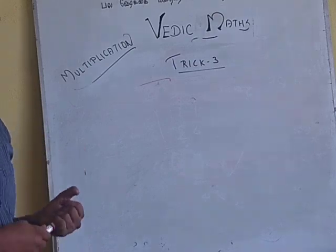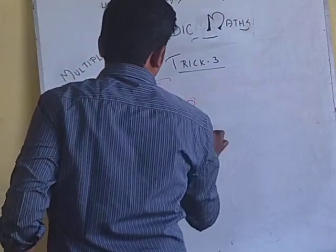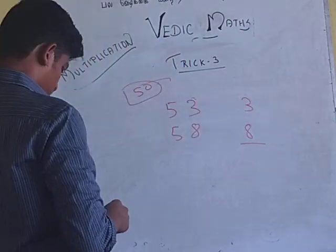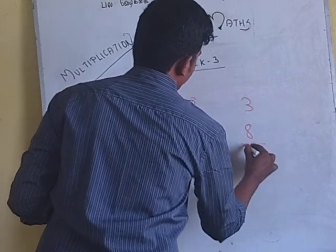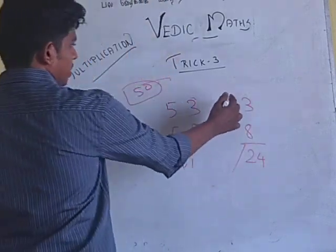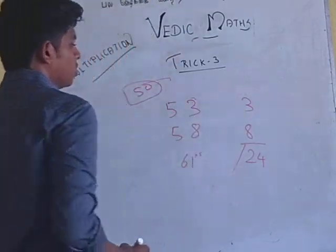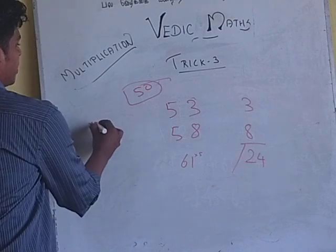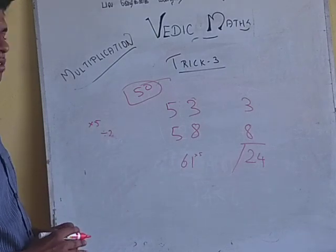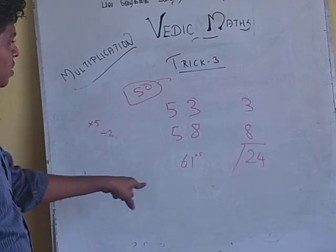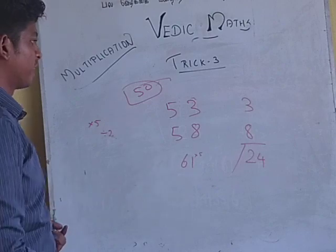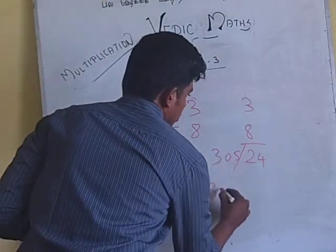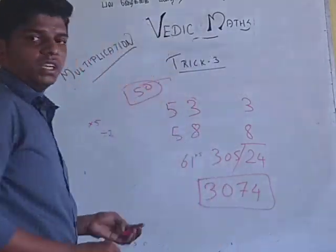For example 53 into 58. 50 is our base. So what happens is 3 times 8 is 24. 61, 61. Didn't add from the 61, we have to multiply into 5. So if you want multiplication by 5, divide by 2 into 10. So if you want to divide by 5, multiply it by 2 into 10. Dividing it by 2, number 30.5 into 10, 305. Only one ten or no, 3074. This would be your answer.